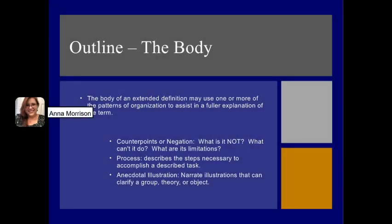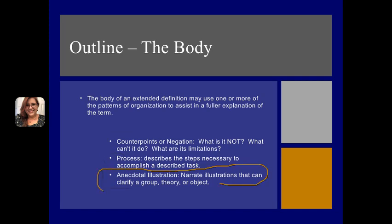As you continue outlining, your body paragraphs are used to support your main idea — that extended definition. You should have a body paragraph for each of the supporting points listed at the end of your thesis statement. You can use different patterns of organization: counterpoints or negation (what is it not?), what can it do, a process approach describing a task, or illustrations with lots of examples. In the monster example, the thesis states that monsters are those who harm themselves, others, or the environment — that would use illustrations as its organizational strategy.